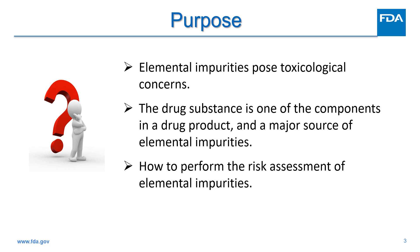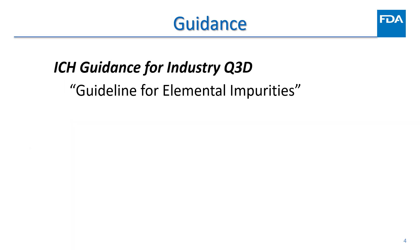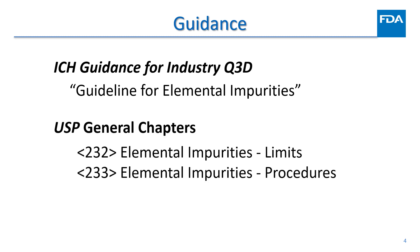FDA requires DMF holders to provide risk assessment of elemental impurities for the manufacturing process of drug substances. The purpose of this poster is to discuss the risk assessment of elemental impurities, including catalysts and environmental contaminants that may be present in a drug substance. The ICH Q3D guideline for elemental impurities gives recommendations for manufacturers of human drugs and biologics on applying a risk-based approach to control elemental impurities and permitted daily exposures. USP General Chapter 232, Elemental Impurities Limits, became official on January 1st, 2018. Chapter 233 has recommendations on the test procedures.